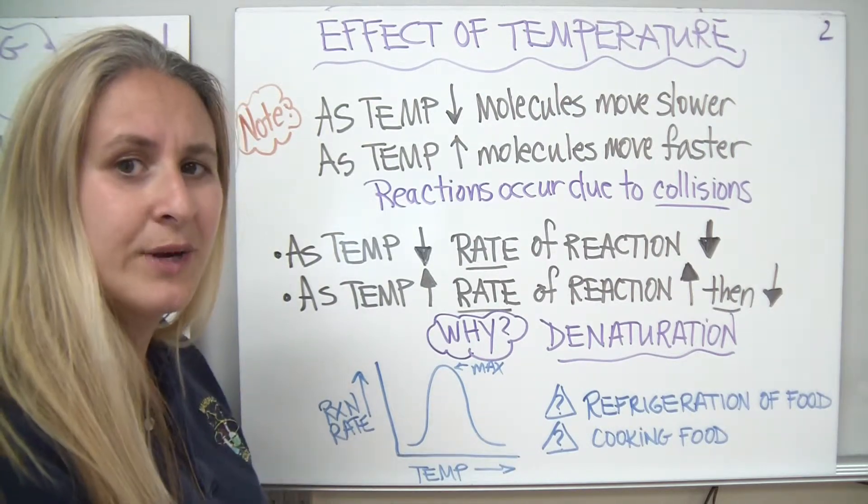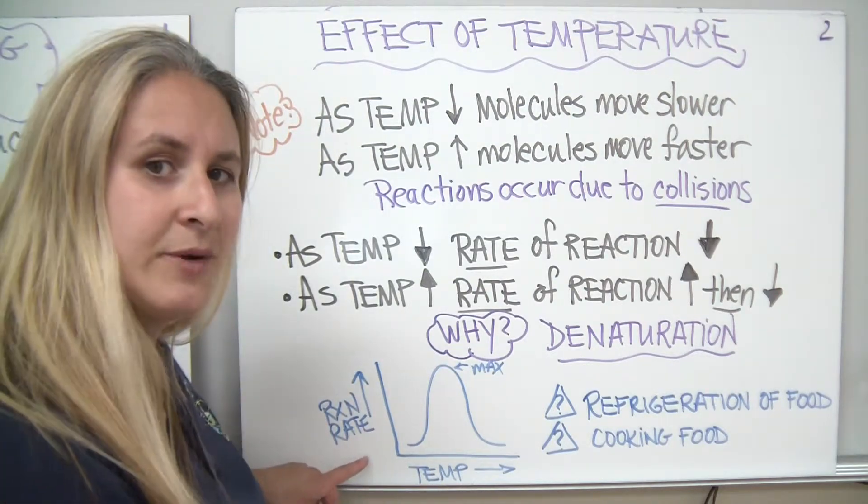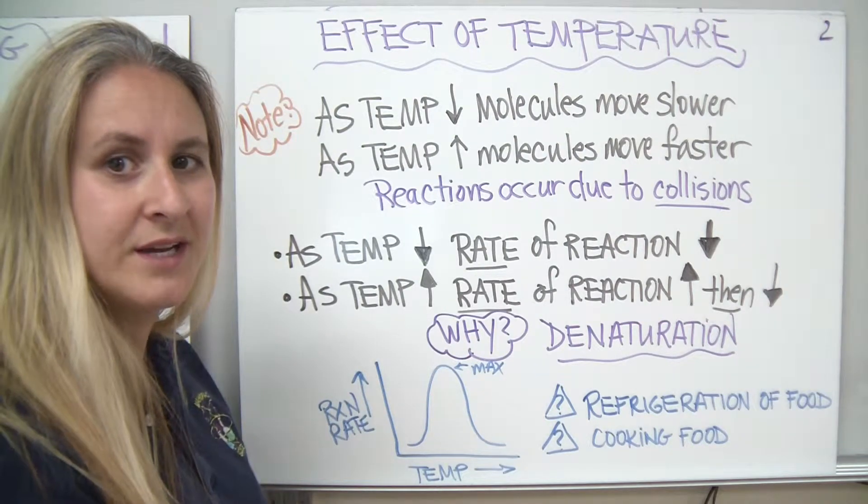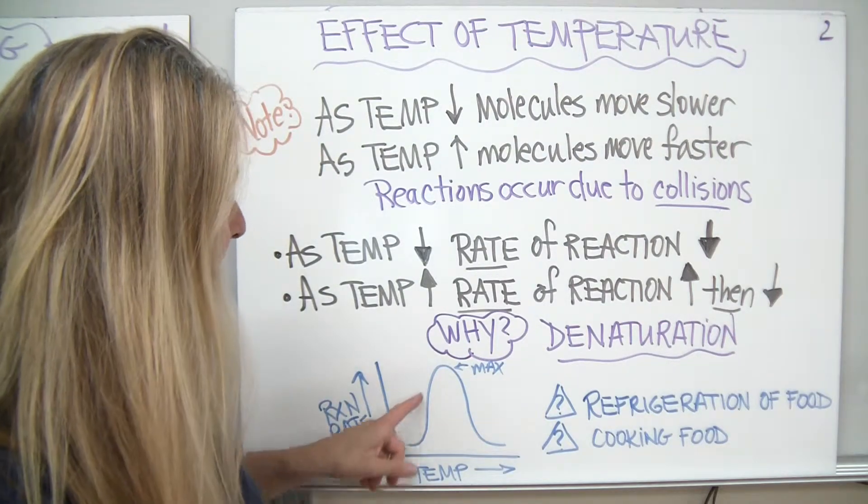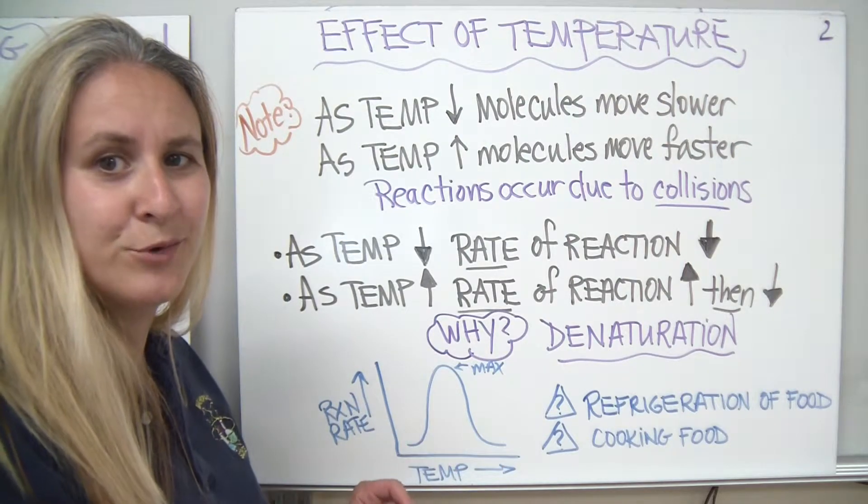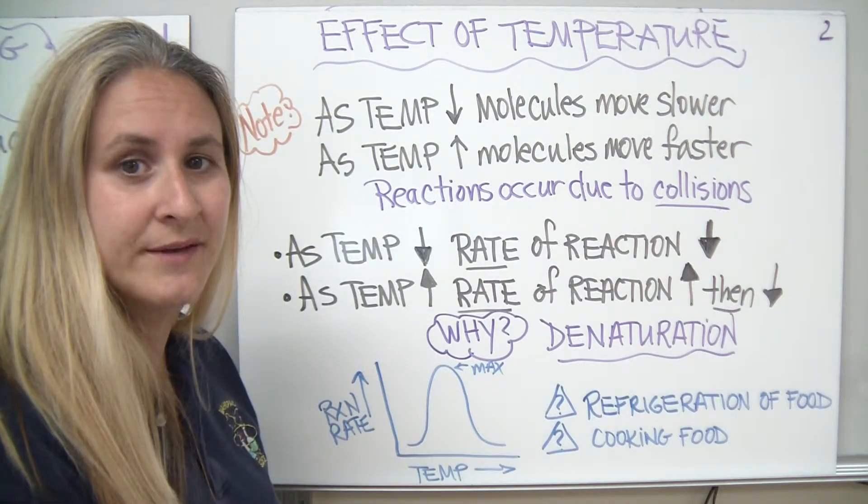Well, if we look at our graph, this is a standard kind of generic-looking graph. If on my y-axis is reaction rate increasing as we go up and temperature increasing on the x-axis, we see this kind of camel hump. At one point there's a maximum rate of reaction, but on either end the reaction rate is essentially nothing.